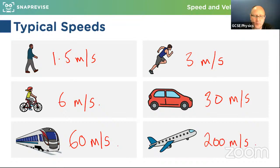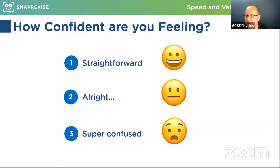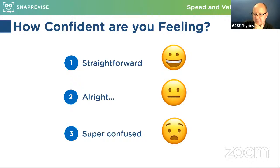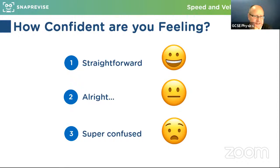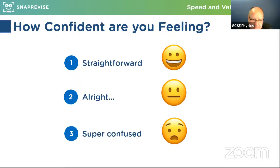Those are approximate values for typical speeds in everyday situations. So we've covered: the speed equation — velocity or average speed equals distance over time — and looked at some typical velocities and worked through examples. How secure are you feeling about what we've covered so far? If you need to re-watch at any point, you can re-watch these streams. The content is designed to be friendly — with enough practice, these questions will get easier.